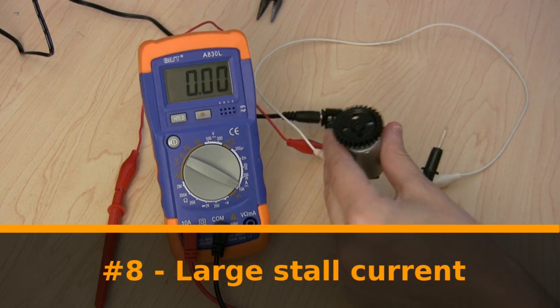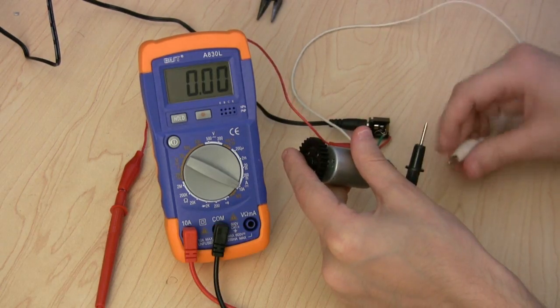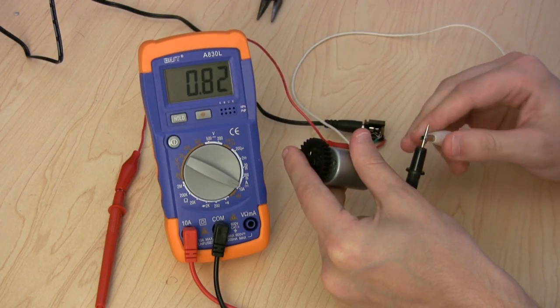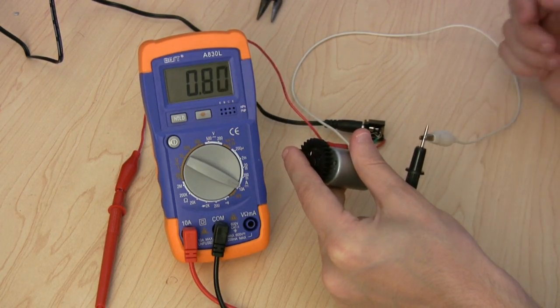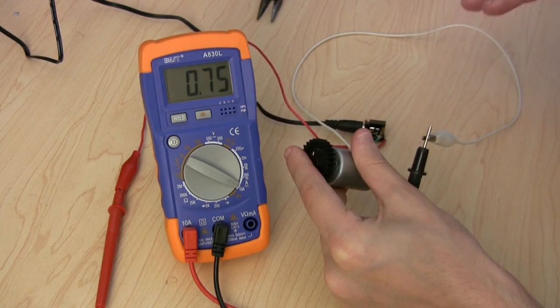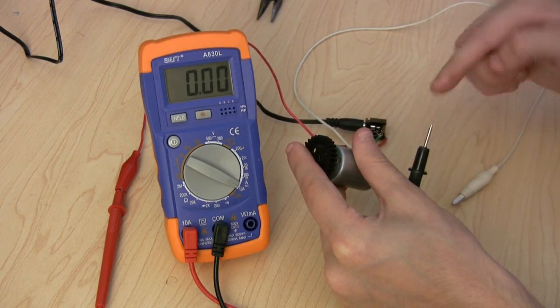Number eight: The one amp number does actually represent the stall current, which is the current of the motor when it's not spinning. If I actually prevent it from spinning with my hand and connect the power supply, you'll see I do get up to about 0.8 amps. This is still less than the one amp, but that's because the power supply is starting to limit the current now. Only try this for a few seconds, because you don't want the motor to overheat.